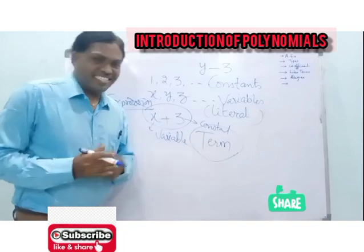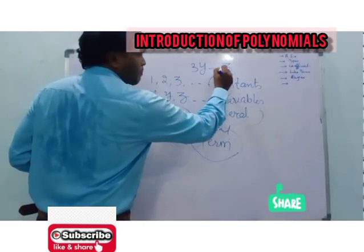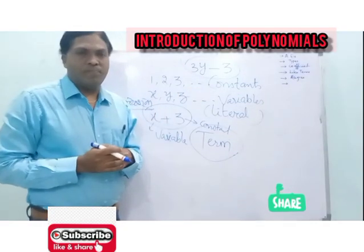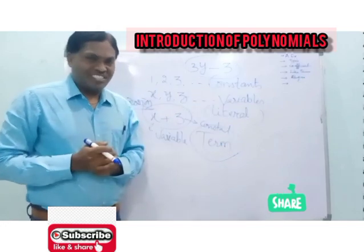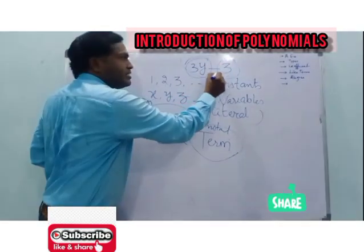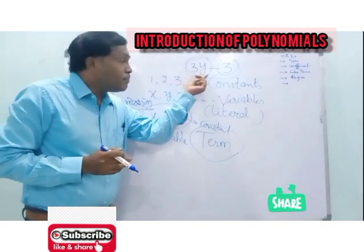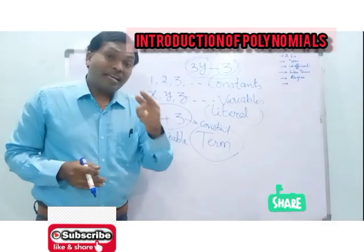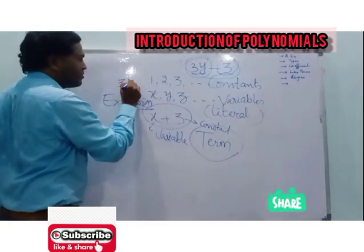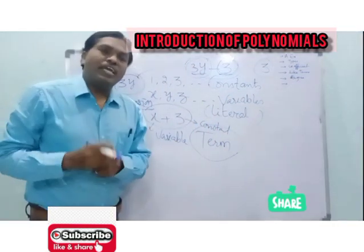Next, what is a term? If you take an expression such as 3y minus 3, this is an expression, and here we have two parts. Each part of the expression is called a term. So the term 3y is a term, and 3 is also a term. Therefore, we have two terms in this expression.